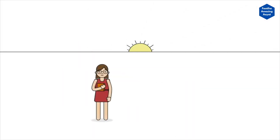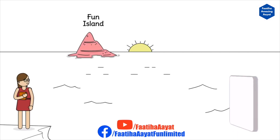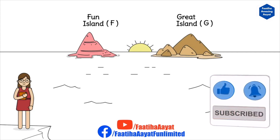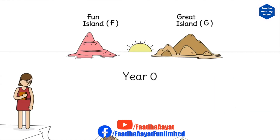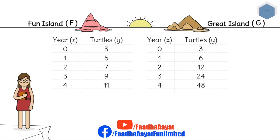Imagine that I'm a scientist trying to figure out the population of turtles between two islands. These two islands — Fun Island and Great Island, which I call F-Island and G-Island for short — have no turtles on them. In turtle year zero, three turtles managed to go there. I come back one year later: F-Island has five turtles while G-Island has six turtles. I keep checking to see how the population grew, and this is the data I managed to get.